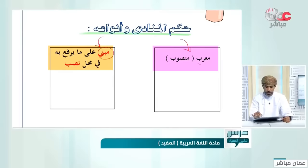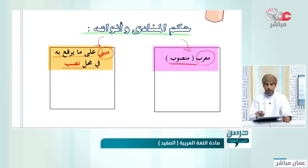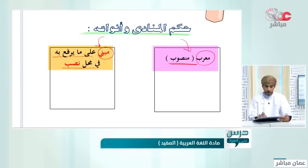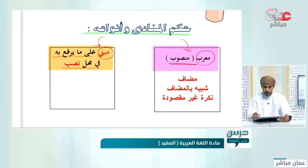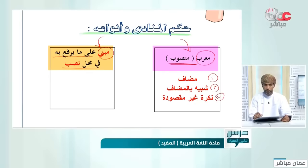المنادى حكمه: إما يكون معرباً بالنصب مباشرة، أو مبنياً على ما يرفع به في محل نصب. أنواع المنادى المعرب: المنادى المضاف، المنادى الشبيه بالمضاف، والمنادى النكرة غير مقصودة.